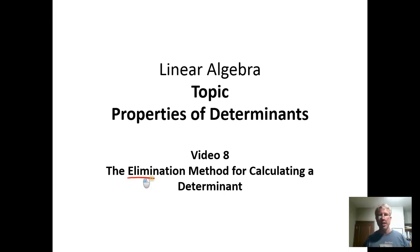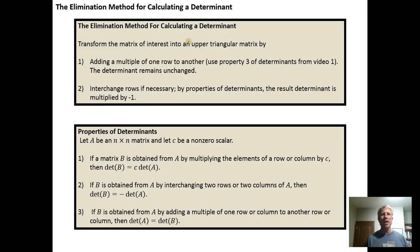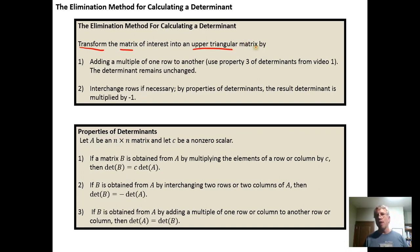In this video, we're going to use the elimination method for calculating determinants. The elimination method is a transformation of the matrix you're interested in into an upper triangular matrix. We do this because if we have an upper triangular matrix, the determinant is just the product of the diagonal elements — a simple way to calculate a determinant.